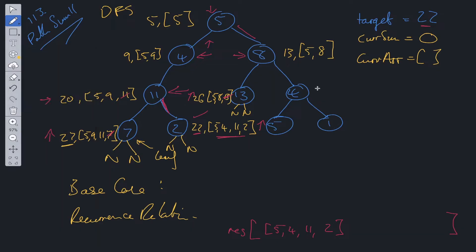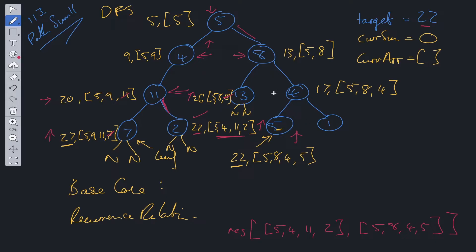So we check that side. At this level it's going to equal 17, and we've got five, eight, and four. We go down the left child — at this point it's going to equal 22: five, eight, four, and five. This is a leaf node, so we check: 22 is equal to the target. We add this array into res. Now we backtrack, popping off current array. We go to this level and check the right side — at this level it's going to equal 18 and current array is five, eight, four, and one. 18 does not equal 22, so we backtrack.